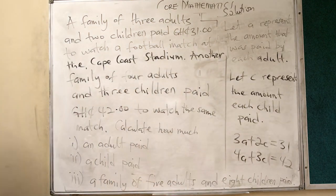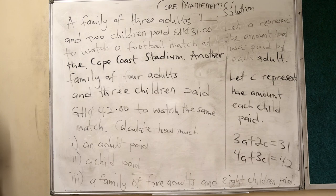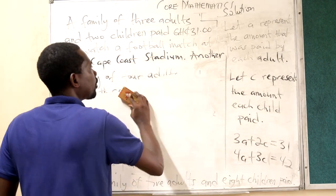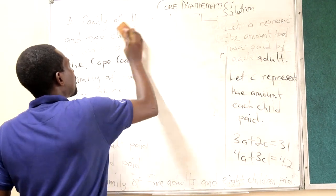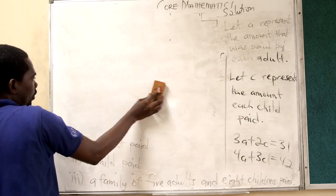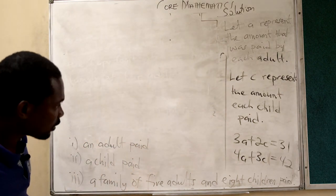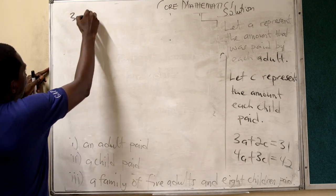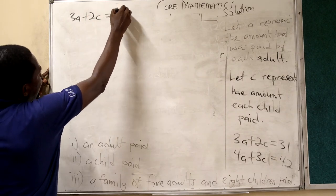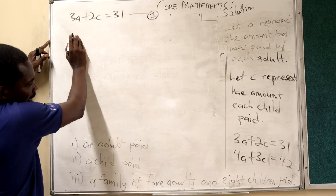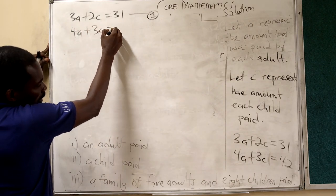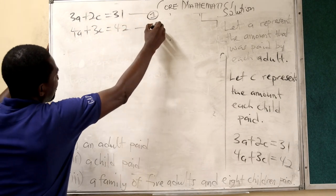So these are the equations that we are going to use. The first equation is 3A plus 2C is equal to 31. That is my first equation. Second equation is 4A plus 3C is equal to 42. That is my second equation.